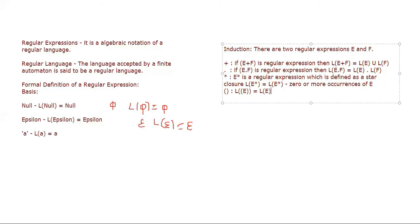To summarize: a regular expression has two parts. In the basis part, we talk about null, epsilon, and symbol 'a' (which could be a, b, 0, 1, etc.). At the induction level, we have four symbols: plus, dot, star, and parenthesis. Plus is union (either/or), dot is concatenation (A followed by B), star is Kleene closure (zero or more occurrences), and parenthesis is used to group expressions.